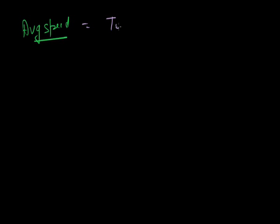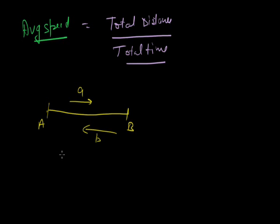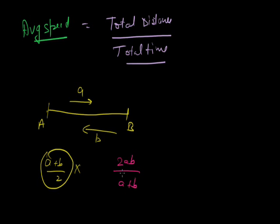Next, this chapter covers average speed. Average speed is total distance travelled upon total time taken. For example, if a person travels from point A to B with speed A, and moves back with speed B, what is the average speed? Many students take the average speed as (A plus B) divided by 2. This is wrong. The right answer is 2AB upon A plus B.